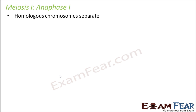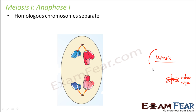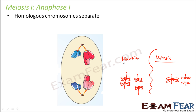The third step, anaphase: the homologous chromosomes will separate. Please note that it is not the chromatids which are getting separated, but the homologous chromosomes. In case of mitosis, you had one chromosome and the sister chromatids were getting separated. But in meiosis, you have two homologous chromosomes together, so it is the homologous chromosomes that are getting separated. That is the key difference between meiosis and mitosis at this anaphase stage.